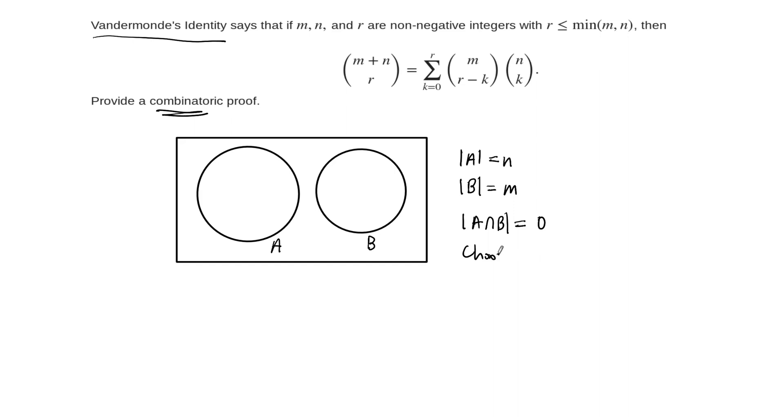And our job here is we want to choose r elements from the union. So choose r elements from the set A union B. That's our job.